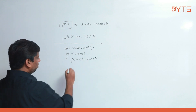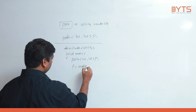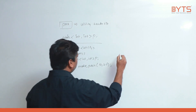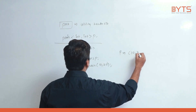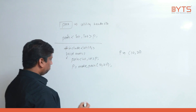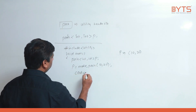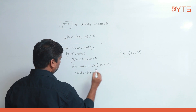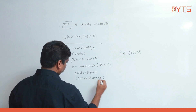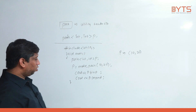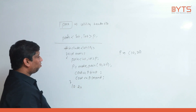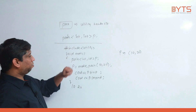Next I need to make a pair: p = make_pair(10, 20). This means we have created p where p contains a pair with values 10 and 20. To get those values: cout << p.first gives you 10, and cout << p.second gives you 20. That is the pair concept.